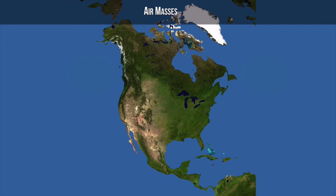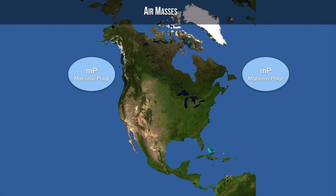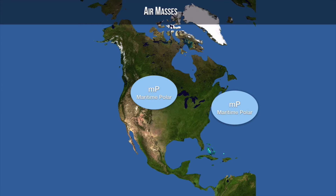Here's our first air mass: the maritime polar air mass. Maritime represents an air mass that forms over the ocean. Polar represents an air mass that forms over a cold region of the Earth — far up into the Northern Hemisphere. These represent colder climates, so maritime polar air masses carry a lot of cold, moist air. They typically move in a pattern driven by the jet stream and prevailing winds, bringing cold and wet air to the regions they affect.